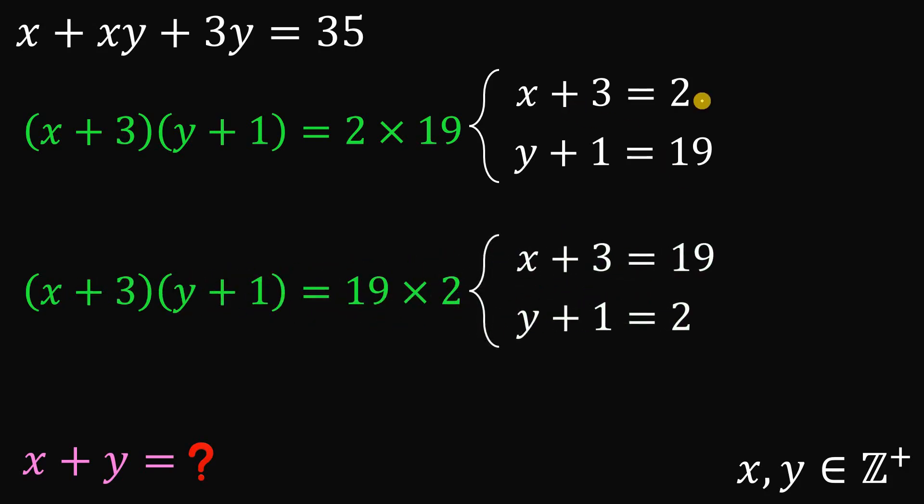Now, let's have the first case. Now, we have x plus 3 equals 2. Let's solve for the value of x. Subtract 3 on both sides. 2 minus 3 is negative 1. Subtract 1 on both sides. 19 minus 1 is 18.